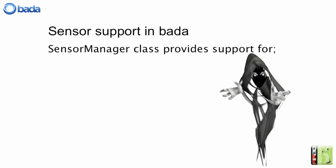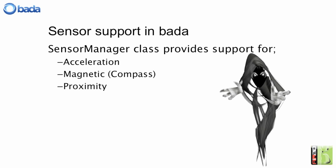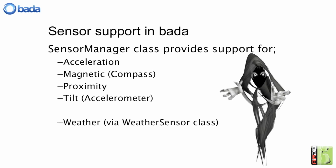Within Bardo we have something called the Sensor Manager Class, which provides support for acceleration and the magnetic sensor for the compass. We have a proximity sensor, which is simply an on-off type sensor, and we have the tilt sensor, which gives you azimuth, pitch, and roll. In addition to that, we actually have a weather sensor. It's a mechanism by which a Bardo application can make an HTTP request to a weather service provider, which will populate the Bardo device with weather information, and of course the GPS location, provided by the location provider class.